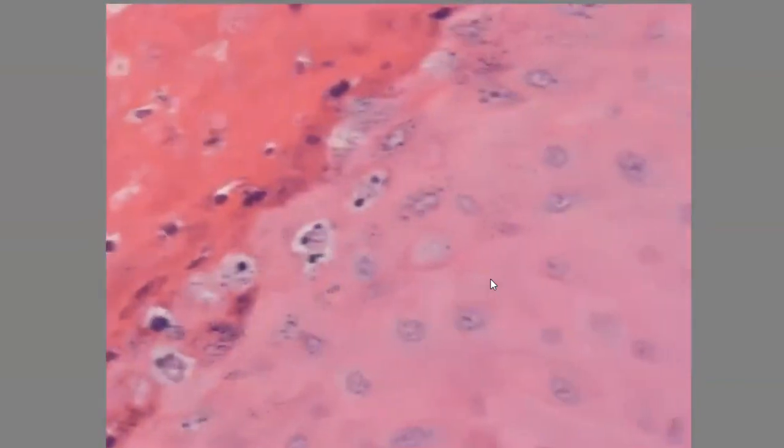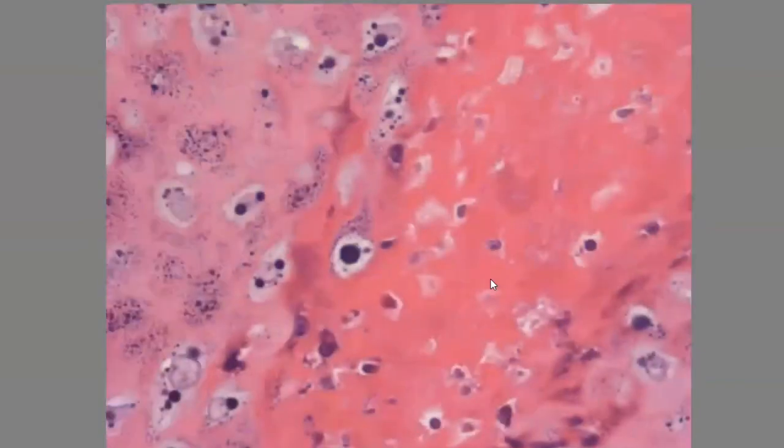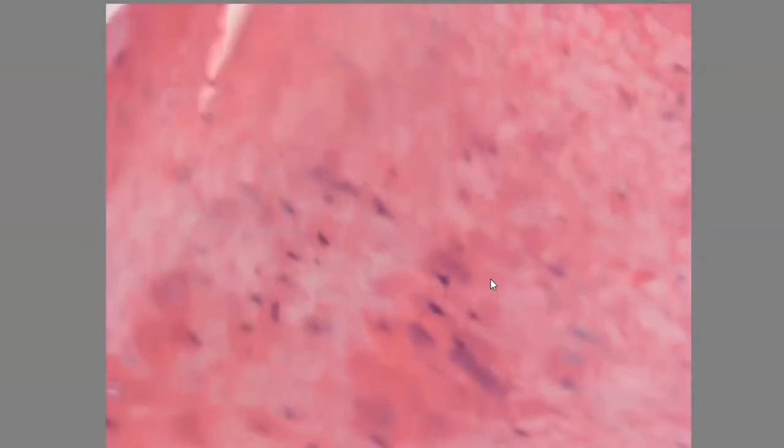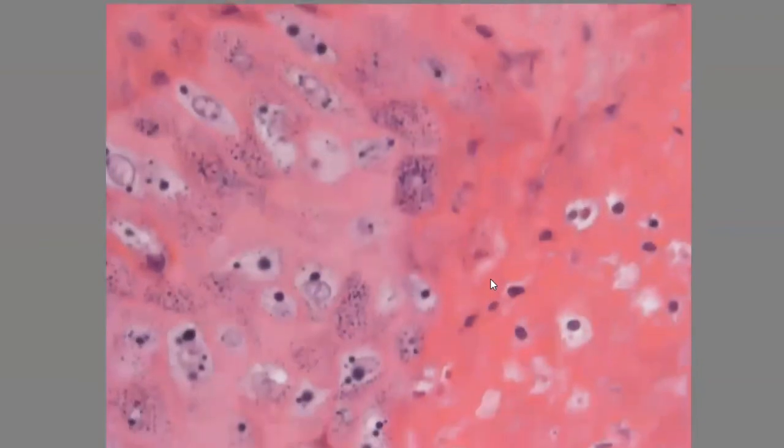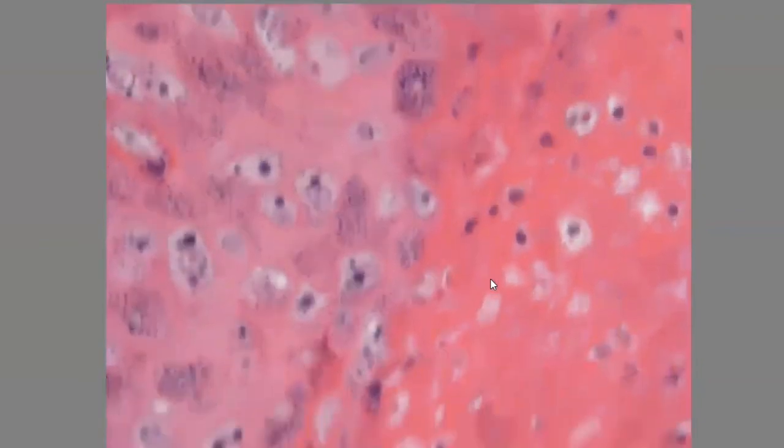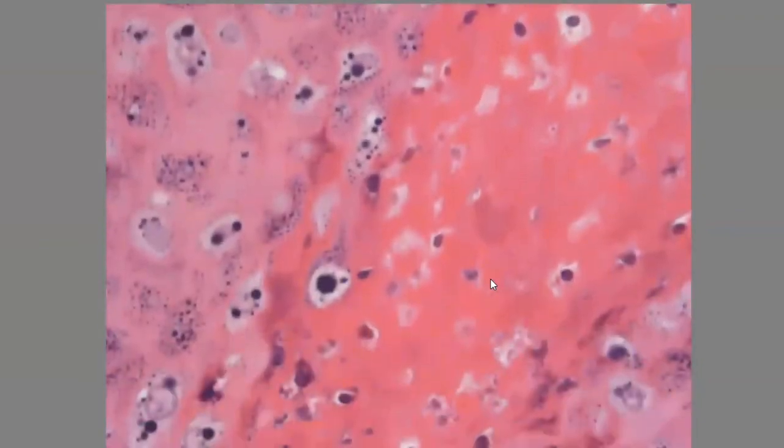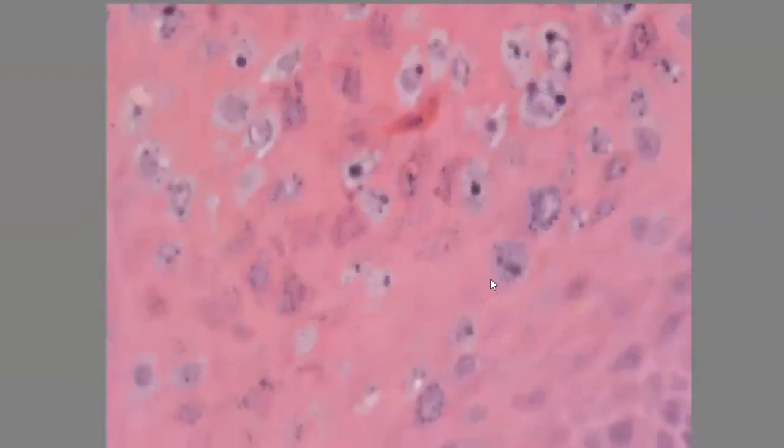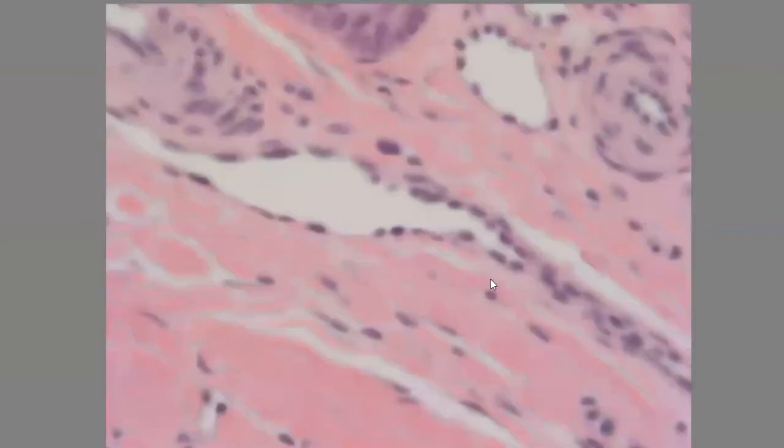So just in summary, we have hyperkeratosis, we have parakeratosis, and in this area at high power we have the granular layer with these clumps of basophilic and eosinophilic granules. And most important is the base of this tumor, which is symmetrical and points towards the center.